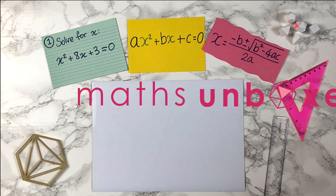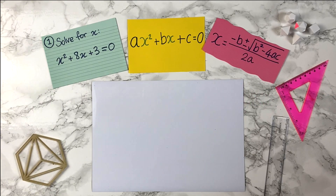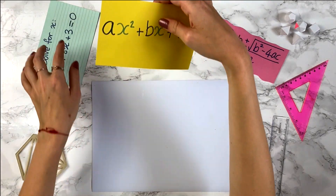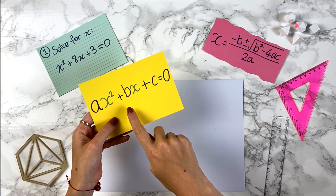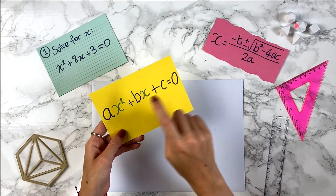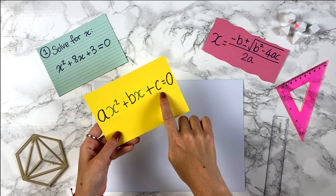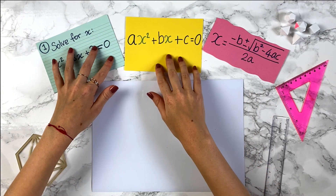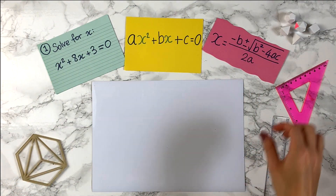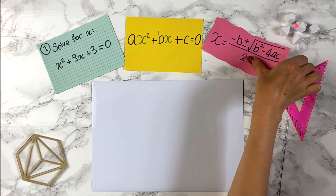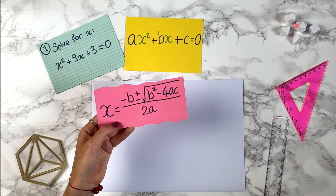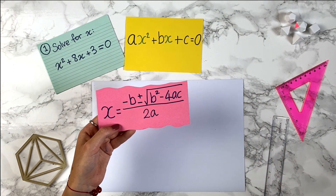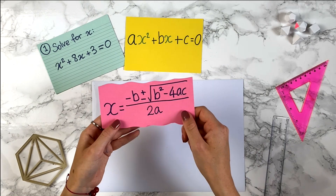Let's look at how to solve quadratic equations using the quadratic formula. Remember, a quadratic equation is of the form ax² + bx + c, where a, b, and c stand for numbers. You might have seen the quadratic formula already — it looks a bit complicated. Unfortunately you kind of need to remember this, so you might want to stick it up around your house.